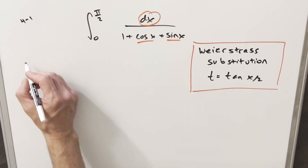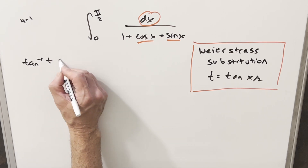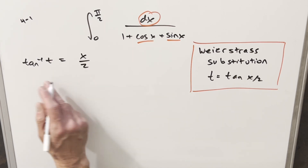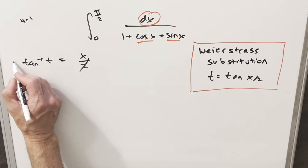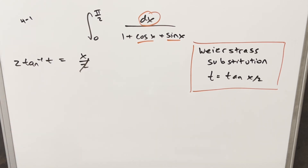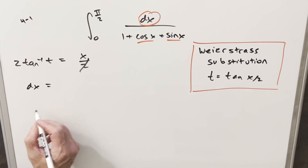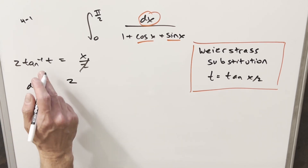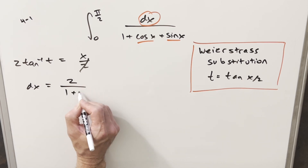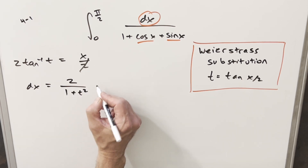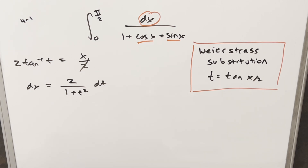Starting with this substitution, if I just take arctan on both sides, we end up with x/2 equals arctan of t. Multiplying by two, I can solve for x. Taking the derivative, I get my dx value. So dx is going to be two times one over one plus t squared, dt.